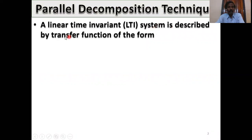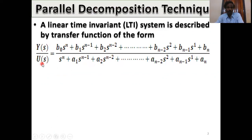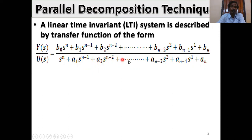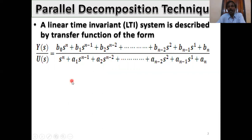Parallel decomposition technique. A linear time-invariant system is described by the transfer function of the form Y(s)/U(s) equals b0·s^n + b1·s^(n-1) + b2·s^(n-2) + ... + b(n-2)·s² + b(n-1)·s + bn, divided by s^n + a1·s^(n-1) + a2·s^(n-2) + ... + a(n-1)·s + an. This is the general transfer function where numerator and denominator powers are equal, i.e., m equals n. Generally m is the numerator power and n the denominator power, with m less than or equal to n. The numerator roots are called zeros and the denominator roots are called poles.